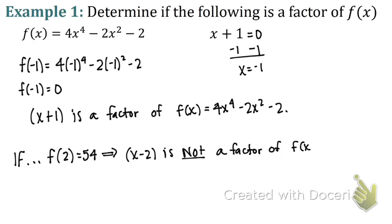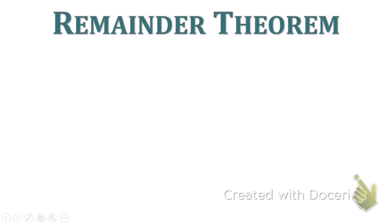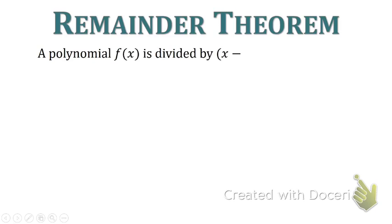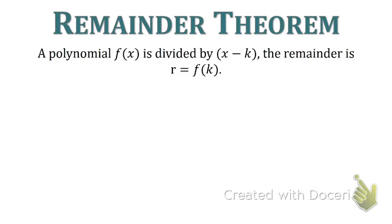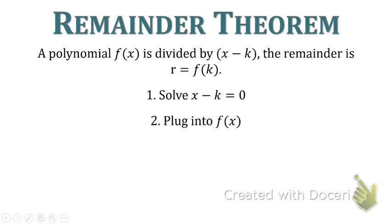Now let's talk about the remainder theorem. The remainder theorem is very similar to the factor theorem. A polynomial f of x is divided by x minus k, and the remainder r equals f of k. What I want you to know is that you're going to solve x minus k equals 0, plug it into the function, and whatever you get is your remainder.